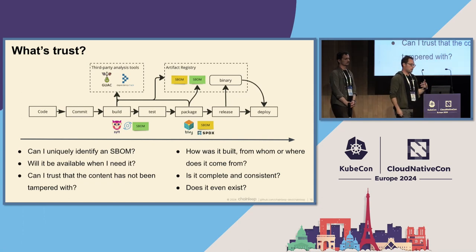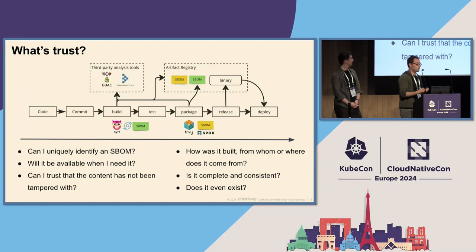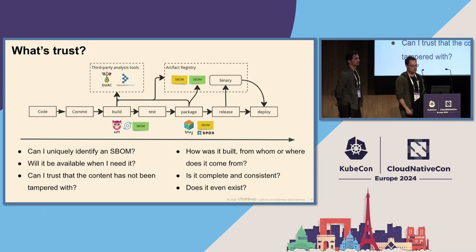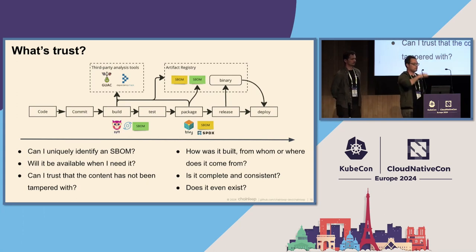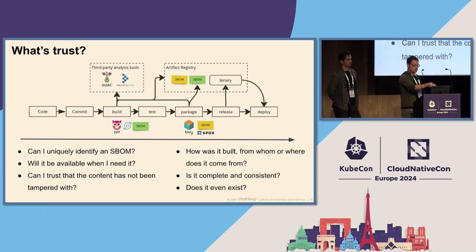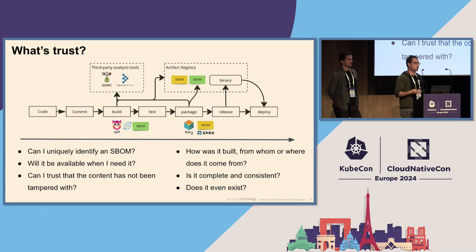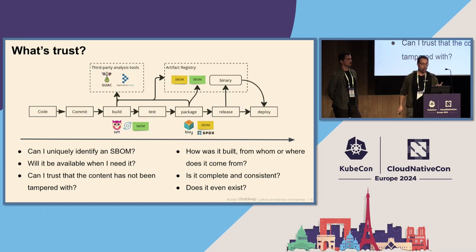These are the kind of questions I will ask about my software build material gathering, generation, and distribution. Can I uniquely identify the software build material I'm looking for? Is it going to be available when I need it — for auditing or analysis — or was it recycled by some archival process in GitHub? Can I trust that the content hasn't been tampered with? Can I answer how it was built and by whom? Is it complete or consistent with the rest of the pieces of evidence we're creating? And does it even exist?